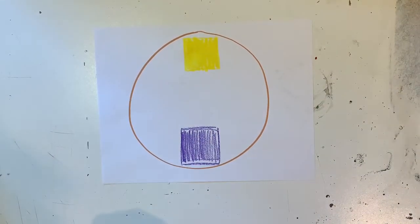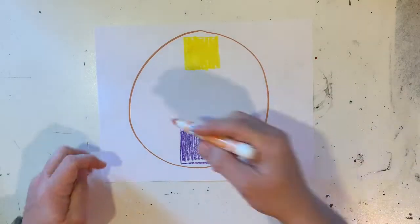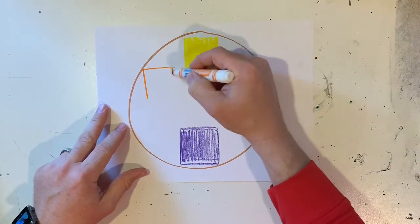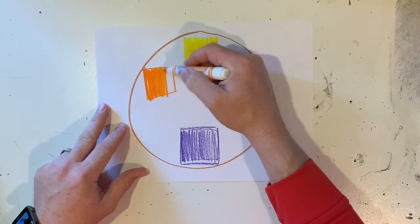Just like that. Then what I'm going to do is go right next to my yellow and I'm going to use orange. I found another orange marker. I took it from my kids' stash, don't tell them.